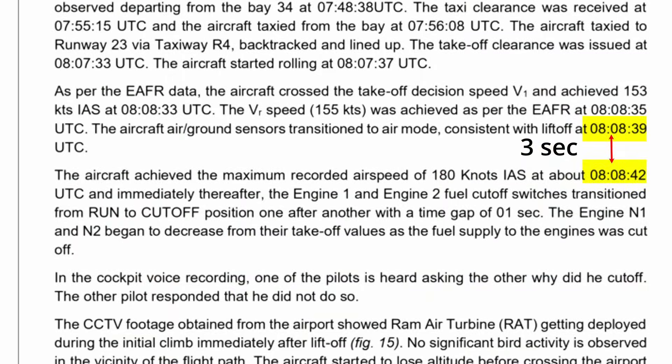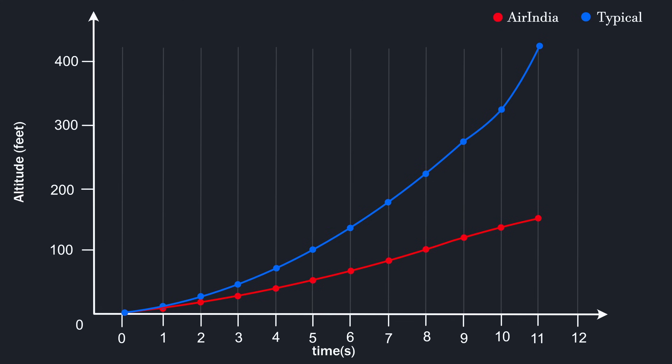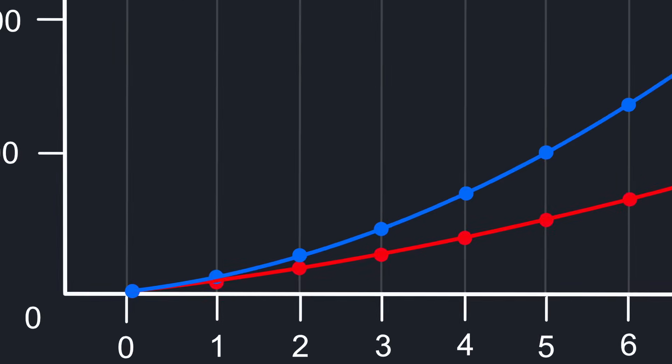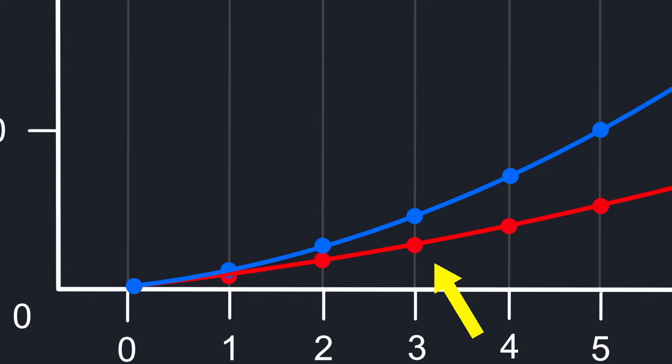This is where I have a serious issue with the Aircraft Accident Investigation Bureau's preliminary report. This report says the fuel cutoff happened after three seconds of takeoff. If this is true, for the first three seconds the trajectory should be perfectly normal. At the end of three seconds, the airplane was supposed to achieve an altitude of 45 feet, but what it actually achieved was just 27 feet. This proves the engines lost fuel supply immediately after takeoff — not three seconds.